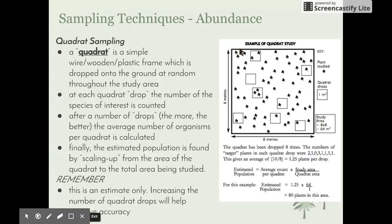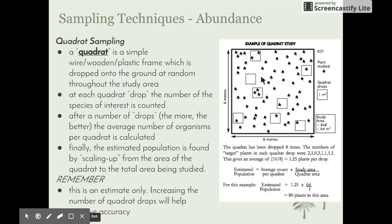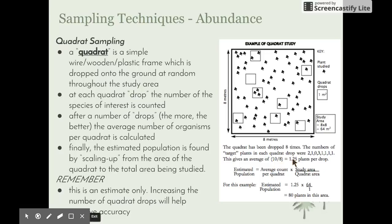In this example, the total area is 8 metres by 8 metres, giving a total area of 64 square metres. The quadrat is 1 metre by 1 metre. It was dropped 8 times. The number of target plants — the clover-looking shapes — found in each quadrat drop were 2, 1, 0, 3, 1, 1, 1, and 1 respectively, giving an average of 10 divided by 8, which is 1.25 plants per drop.